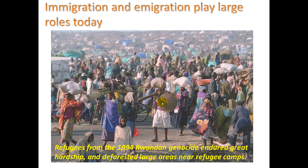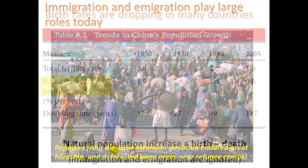Immigration and emigration do play a large role, especially today where people are more mobile with greater transportation. We see here refugees from the 1994 Rwandan genocide who endured great hardship. They also deforested large areas near refugee camps for resources, so there can be environmental impacts as well to migration.